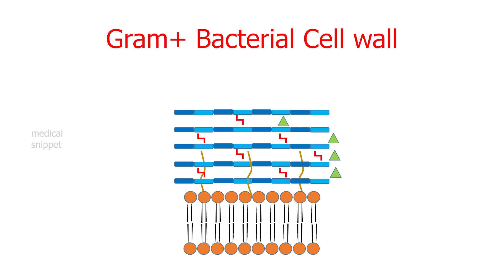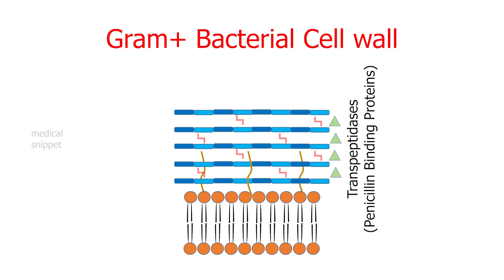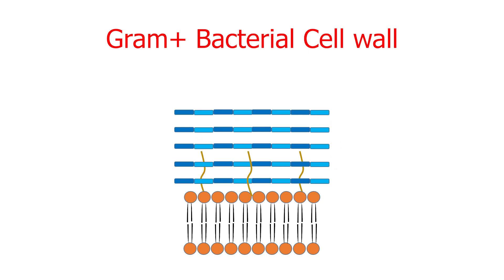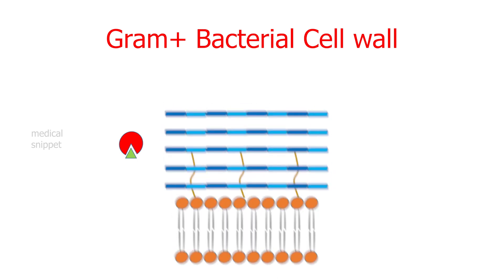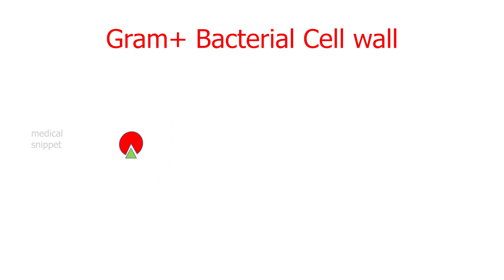The transpeptidases are also called penicillin-binding proteins. Beta-lactam antibiotics, which contain a beta-lactam ring, bind to the penicillin-binding proteins, thus interfering with cross-linking of peptidoglycan strands. When susceptible bacteria divide in the presence of a beta-lactam antibiotic, cell wall-deficient forms are produced. As the interior of the bacteria is hyperosmotic, the bacteria swell and burst. Thus, beta-lactams are bactericidal.